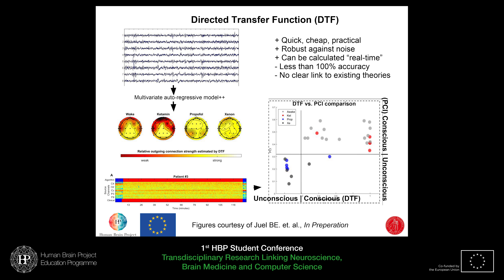Ketamine is interesting as an anesthetic because you have vivid dreams while under it — at least some theorize that's why its DTF topography looks so much like the wake state. In a single time course for a single patient, you can see qualitatively different connection strengths over time compared to when the patient is awake. Compared to the PCI, the DTF is quite robust in classifying conscious versus unconscious states, though PCI is overall much better — the DTF is close but no cigar yet.